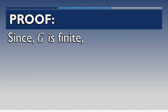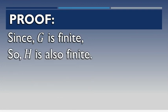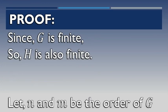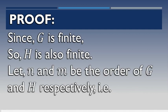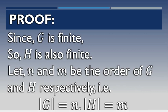Since G is finite, the subgroup H is also finite. Let n and m be the order of G and H respectively, that is, order of G is equal to n and order of H is equal to m.